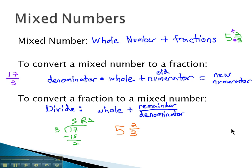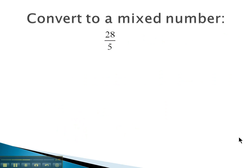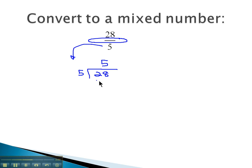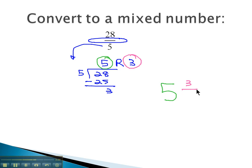So let's try a few examples where we make these conversions between mixed numbers and fractions. Here, we have twenty-eight-fifths, and we want to change this into a mixed number. The fraction bar really represents division, so we're going to divide five into twenty-eight — very important that the bottom number goes out front. Five goes into twenty-eight five times. Five times five is twenty-five, and so when we subtract, we end up with a remainder of three. The whole number then becomes the whole number of my mixed number, and the remainder becomes the numerator over the original denominator of five. We have five and three-fifths for our equivalent mixed number.